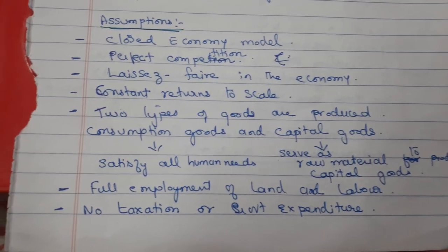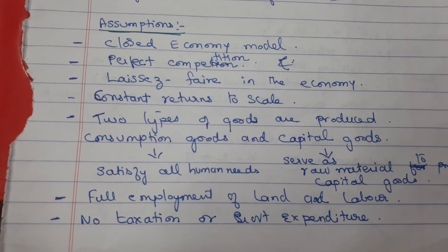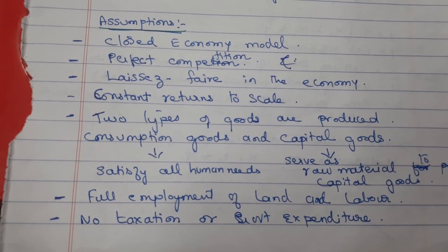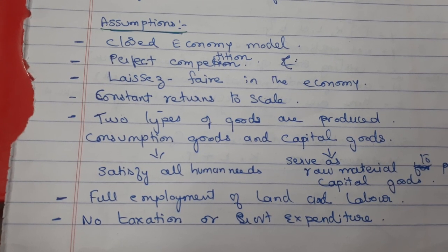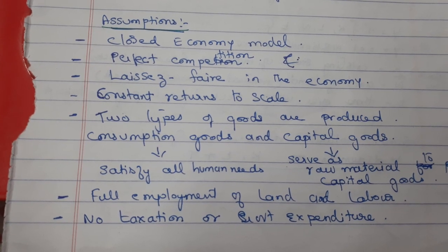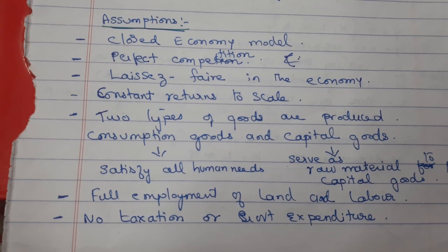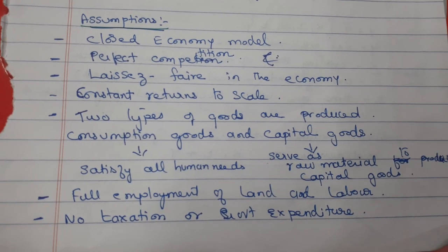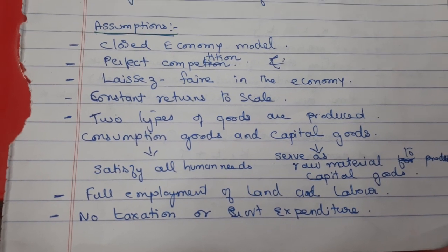A few assumptions have been outlined by James Meade: closed economy model, perfect competition in terms of production, laissez-faire in the economy, constant returns to scale, two types of goods are produced — consumption goods and capital goods. Consumption goods satisfy all human needs and capital goods serve as raw material to further produce capital goods. Full employment of land and labour, no taxation or government expenditure.